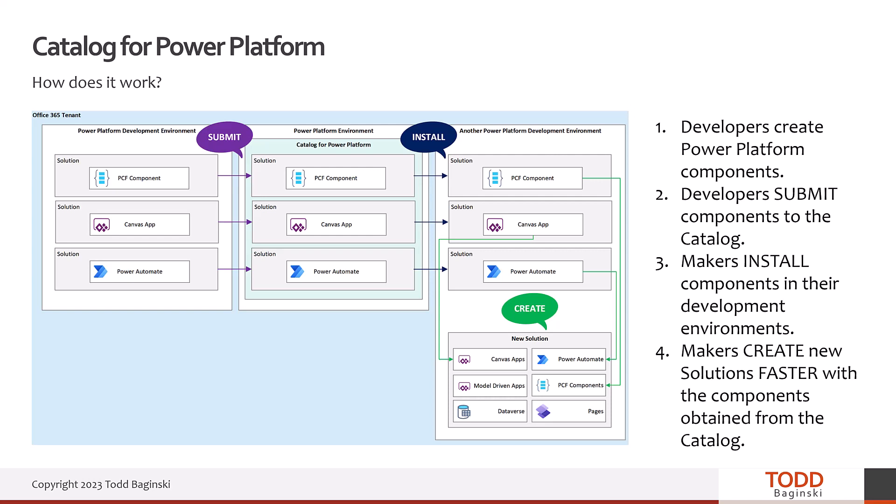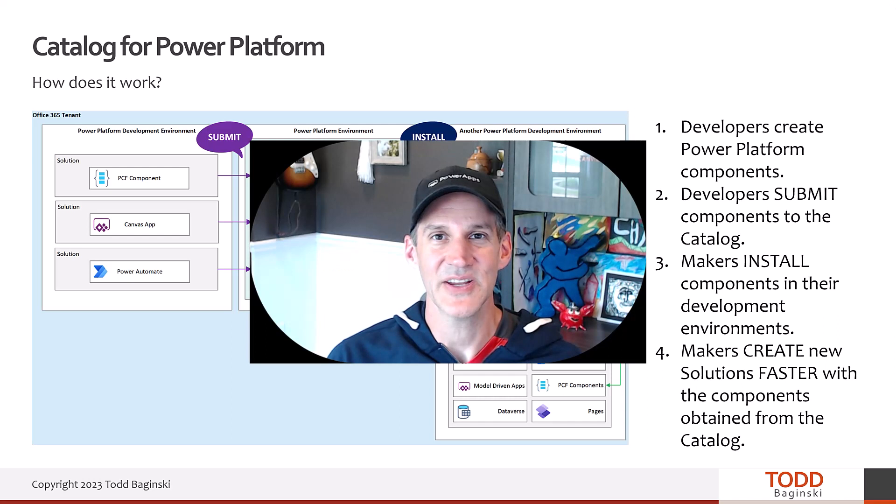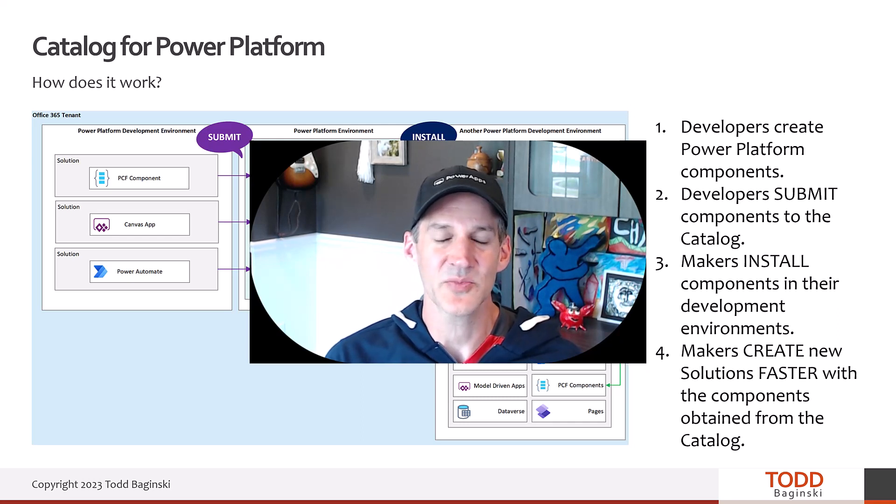The last important thing to think about with the catalog is that it's not just for net-new development. You can take things you've completed, put them in the catalog, and then pull them out later to quickly start iterating and enhancing them. I hope you find this video helpful, and I'd like to give a shout out to all the folks at Microsoft who allowed us to participate in the preview. If you need help setting up the Catalog for Power Platform in your environment, please reach out at canvas.com — we help folks all the time. Have a great day.